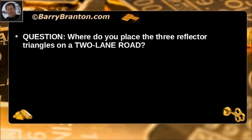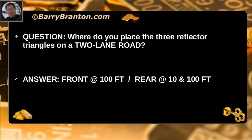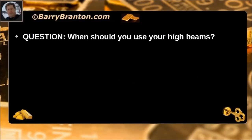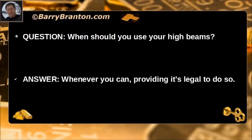Where do you place the three reflector triangles on a two-lane road? Place one at the front at 100 feet, and at the rear at 10 feet and 100 feet. When should you use your high beams? Whenever you can, providing it is legal to do so.